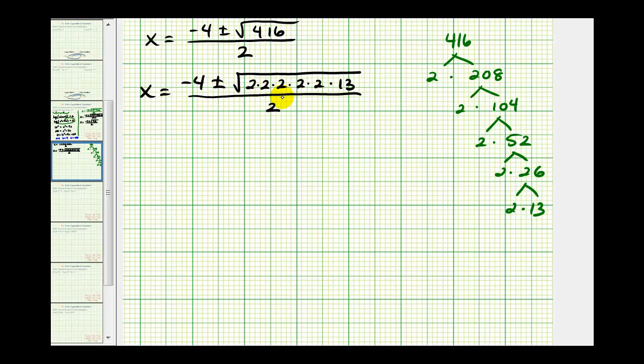This is still divided by two, so every time we have two equal factors, we have a perfect square factor, so this will simplify. So we have x equals negative four, plus or minus, this is going to be four square root 26, all divided by two.